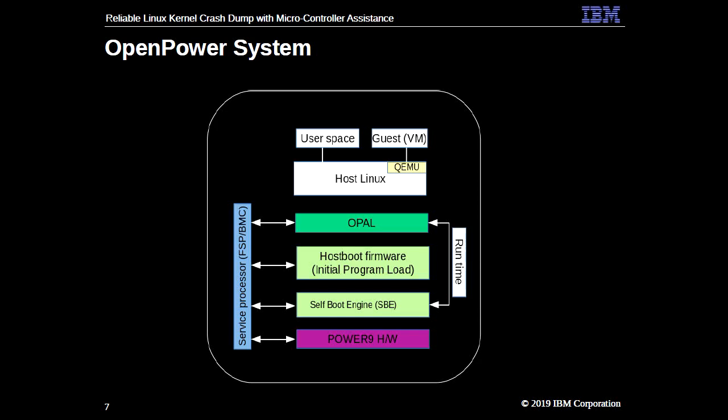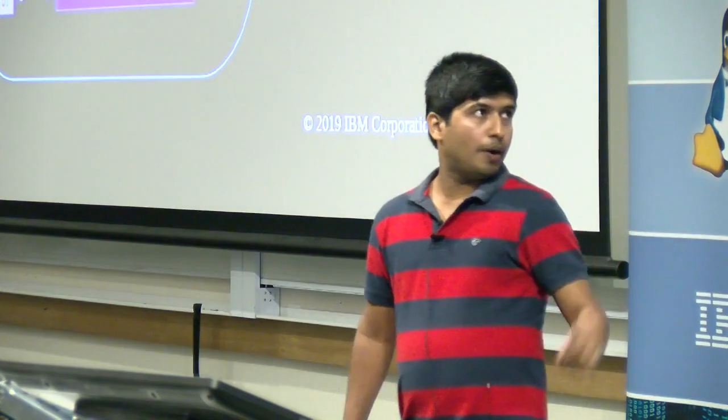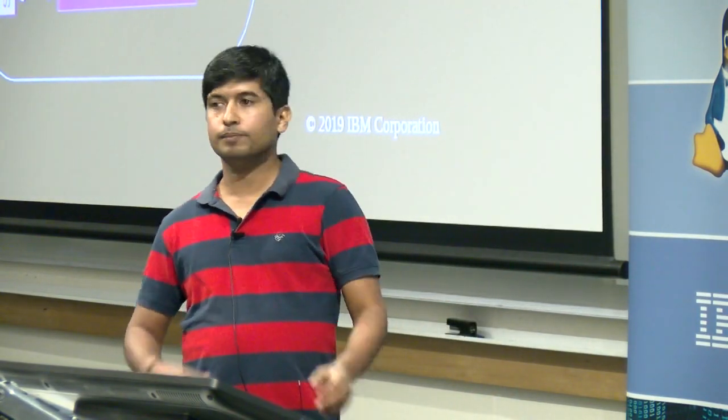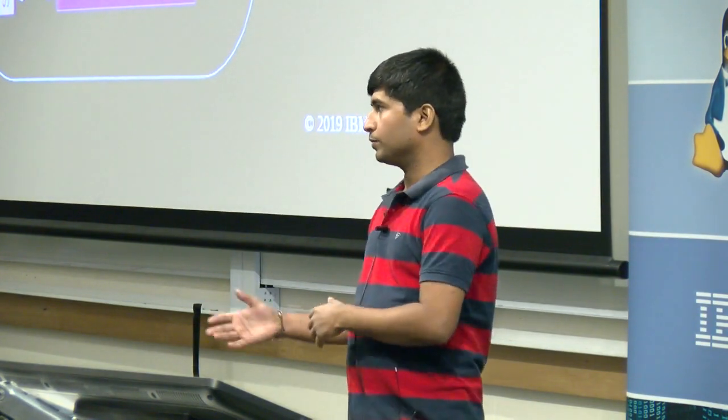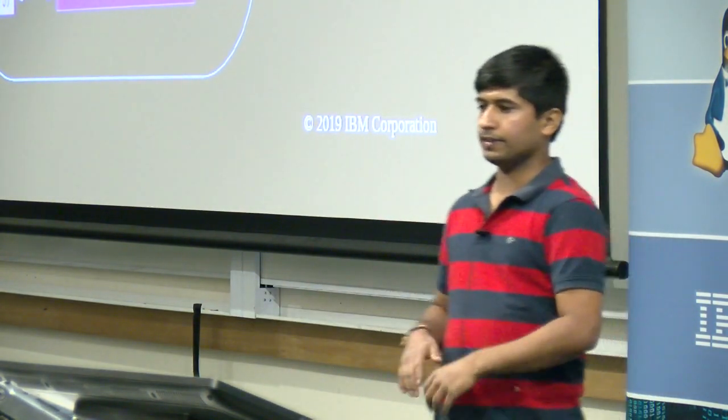A small part of hostboot continues to run in the system, but let's not get into those details. Once the hostboot firmware loads, it gives control to the OPAL firmware, known as Open Power Abstraction Layer. This is a tiny firmware where I spend most of my time. It builds the device tree for the host Linux, initializes various other things like interacting with the service processor, and during runtime it interacts with the SBE of the chip. Then it gives control to host Linux, and on top of that you can run VMs or guests, similar to how we run in the x86 world.